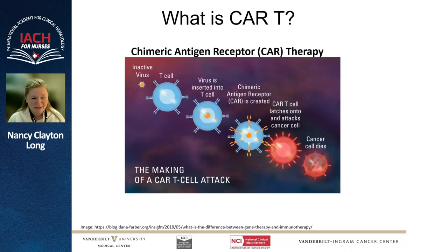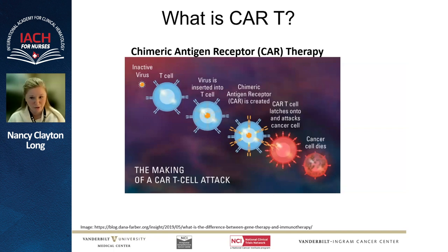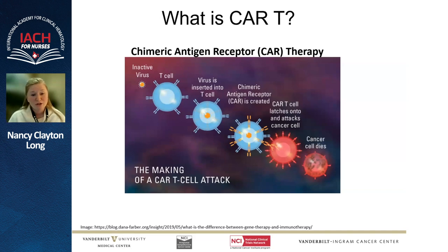So what is CAR-T? I really like this image from our colleagues at Dana-Farber. CAR-T essentially uses gene therapy to perform immunotherapy. CAR-T cell therapy uses our patients' own T cells, which are then genetically modified in a laboratory to make a protein called a chimeric antigen receptor, or CAR. These receptors are proteins engineered to give those T cells the new ability to target a specific protein. When these T cells are returned to our patients, those cells will seek out and destroy the cancer cells wherever they're found in the body.